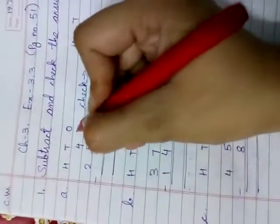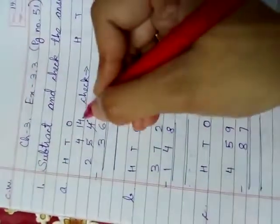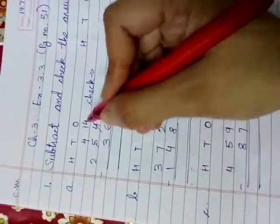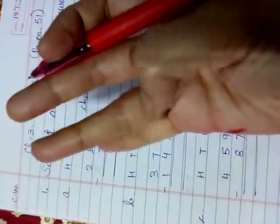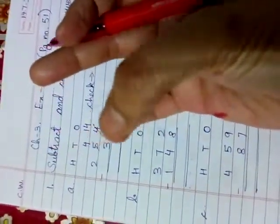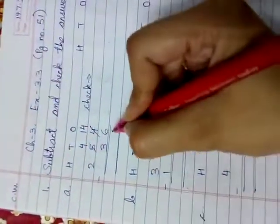Let us do subtraction. These questions you have already subtracted in the book. 4 minus 6, not possible. 5 will give the borrowing, become 4. 4 will become 14. 14 minus 6. Count after 6 till 14. 7, 8, 9, 10, 11, 12, 13, 14. Here, which number comes? 1, 2, 3, 4, 5, 6, 7, 8. Write 8.